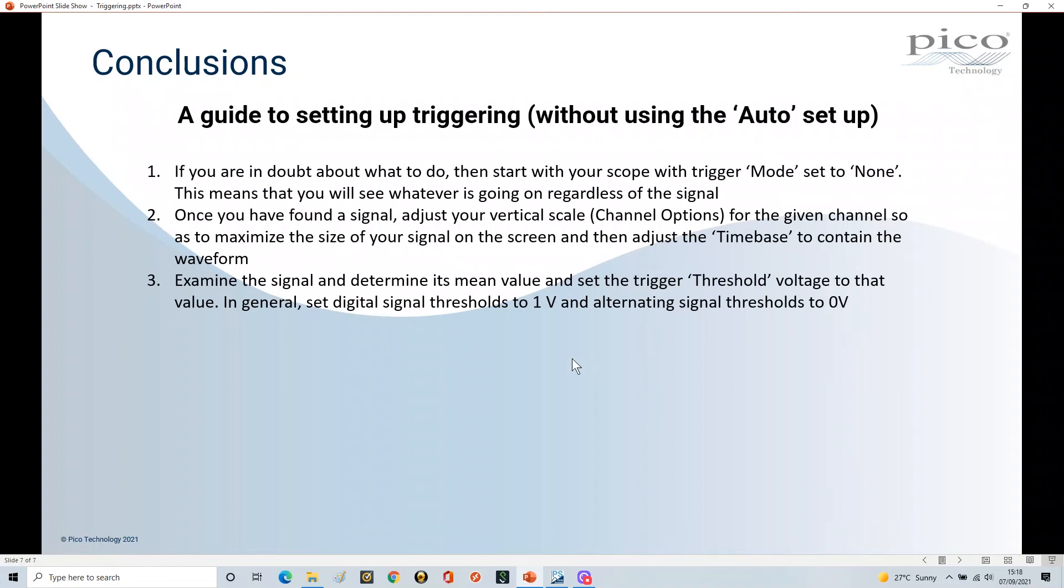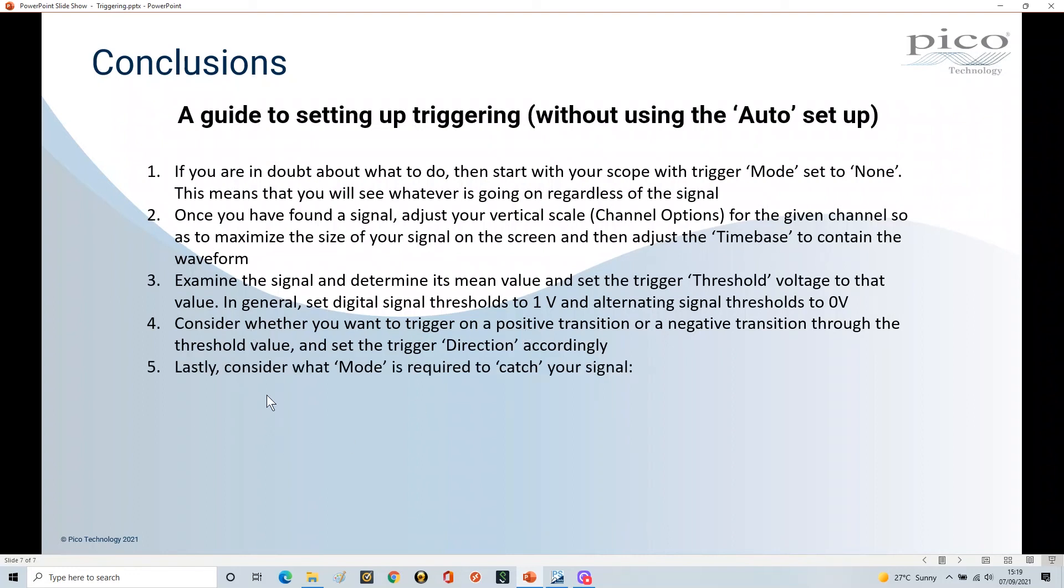Then at least you stand a chance of capturing everything. Now when you've done all of this, consider whether you want the trigger to be on a positive transition or a negative transition through the threshold. This will be relevant if you're looking at data capture in protocols and all that kind of stuff. So just set your trigger direction accordingly, and then once you've done all of that then you look at the mode.